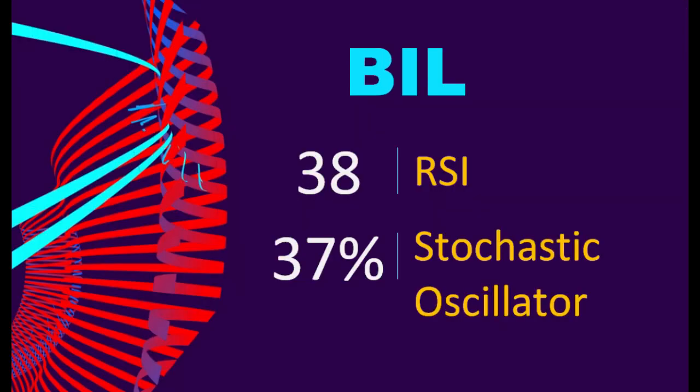5. BIL. What technical signals should you watch for when analyzing BIL? Technical Signals and Analysis. BIL's 14-day Relative Strength Index (RSI) value was 38. When the RSI is above 25 and below 50, it generally indicates that the stock is moderately bearish. This means that the securities price has been falling but has not yet reached oversold levels, typically considered an RSI reading of 25 or lower.